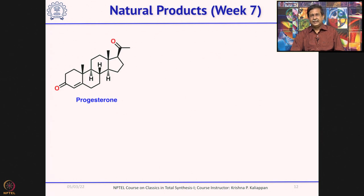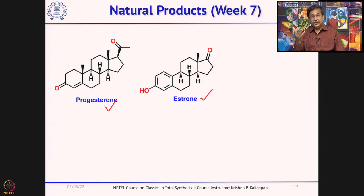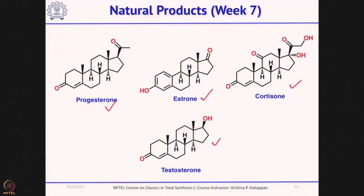Then we move to synthesis of steroids. We start with a very famous biomimetic total synthesis of progesterone by William Johnson, followed by Torgov's total synthesis of estrone — a methodology still used by many pharmaceutical companies today. We also discuss other total syntheses of estrone, and then continue with cortisone — especially relevant as methylcortisone was used for COVID-19 treatment — and testosterone, the male sex hormone. These four steroid natural products will be discussed in week seven.